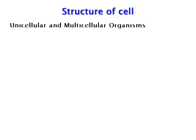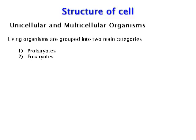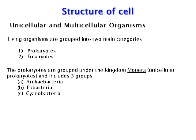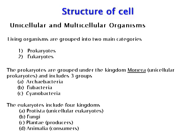Living organisms are grouped into two main categories: prokaryotes and eukaryotes. The prokaryotes are grouped under the kingdom Monera — unicellular prokaryotes — and include three groups: Archaebacteria, Eubacteria, and Cyanobacteria. The eukaryotes include four kingdoms: Protista (unicellular eukaryotes), Fungi, Plantae (producers), and Animalia (consumers).